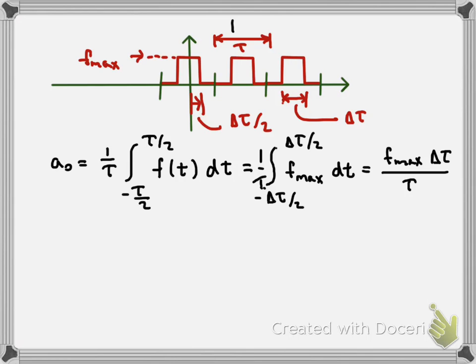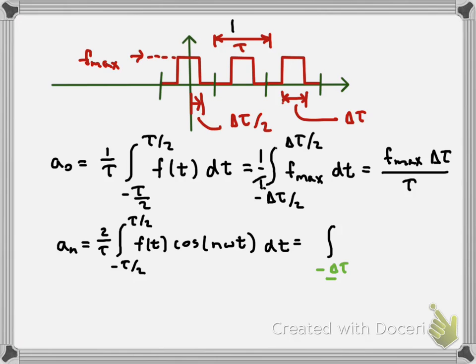So the formula for a_0 winds up being f_max · δτ / τ. That's the zero coefficient, the constant term of the Fourier series. The more interesting terms are all the non-constant terms. For a_n, we have the formula (2/τ) times the integral from −τ/2 to τ/2 of f(t) cosine(nωt) dt.